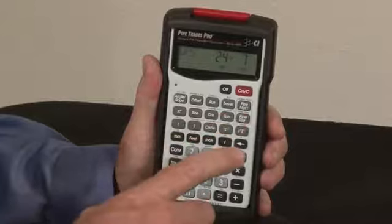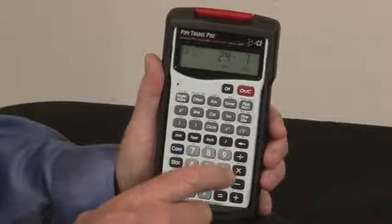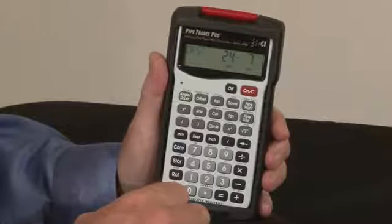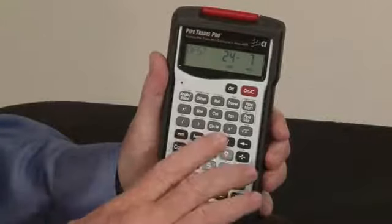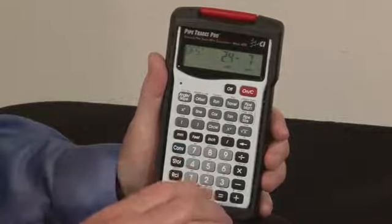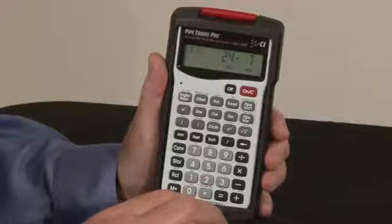In the calculator there are built-in material tables for seven different kinds of materials from steel and stainless steel to PVC and copper. Within each pipe material you can find pipe types, all the different schedules for each of the material types. You can also enter pipe sizes.